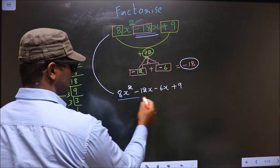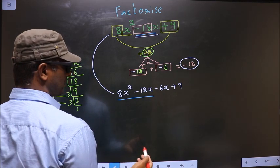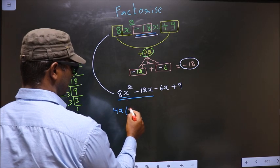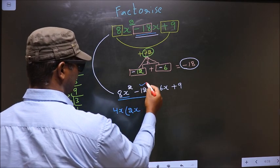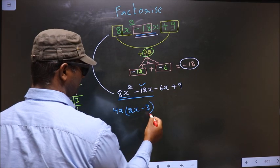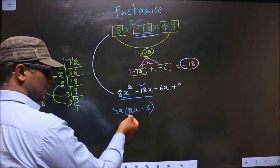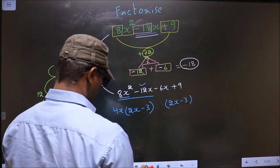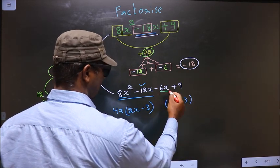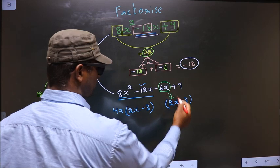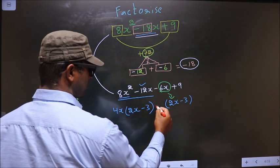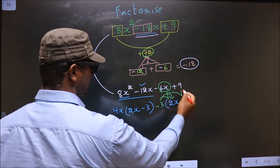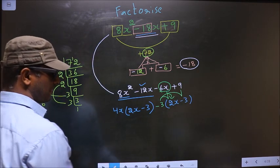Next, from these two terms, what can be taken out common is 4x. So here you get 2x and here you get minus 3. Now, from this, 2x has gone inside, so outside you get minus 3. Even if you multiply and see, still you get the same thing.